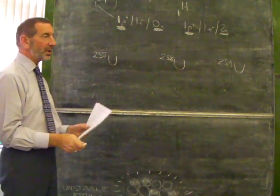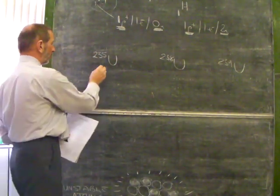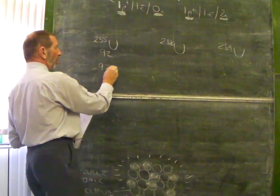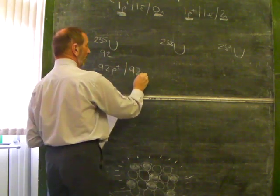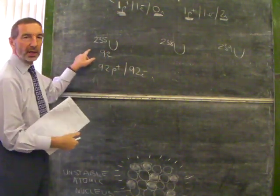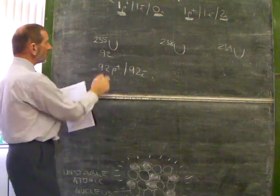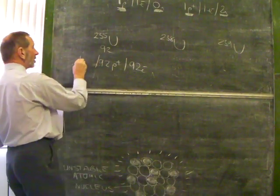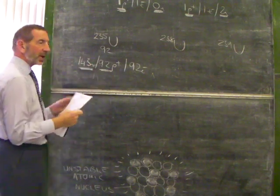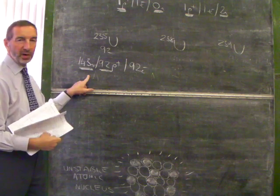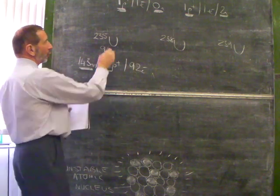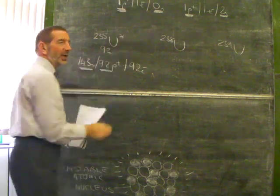Uranium is in box 92 of the periodic table. Why? Because its atoms have 92 protons, which means its atoms must have 92 electrons. Looking at the numbers here, the difference between these numbers tells us how many neutrons we're dealing with. This one has 143 neutrons. This particular combination of 143 neutrons and 92 protons is unstable, making this isotope of uranium radioactive.